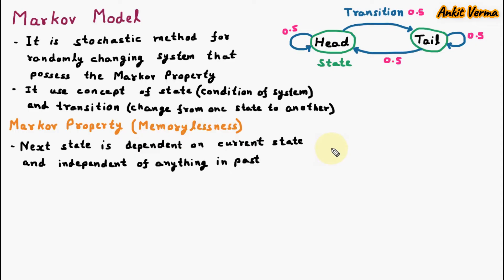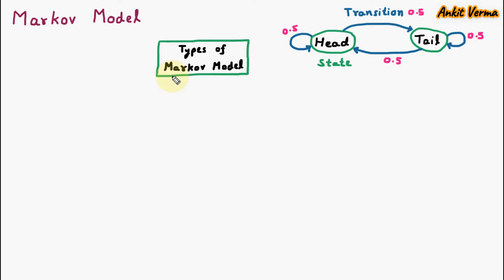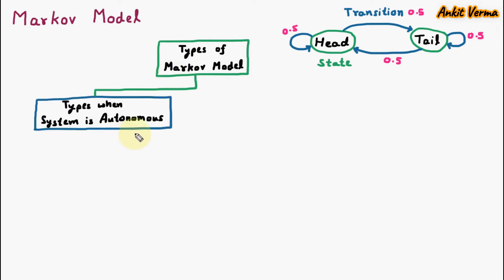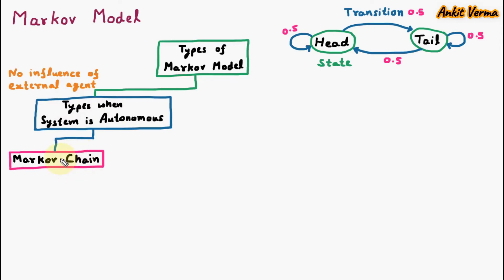Now we are learning the types of Markov Model. The types of Markov Model are based on two categories. The first category is types when the system is autonomous — means there is no influence of an external agent. The first type of Markov Model in this category is Markov Chain. Markov Chain is used when all the states are observable — means if we are on one state and we can observe the other states, then we can use the Markov Chain model.